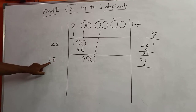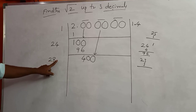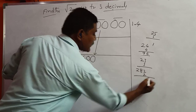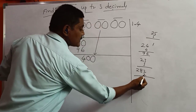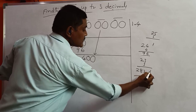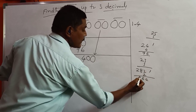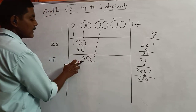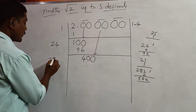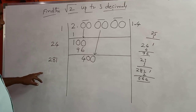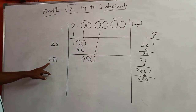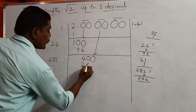Again put down 2 zeros making it 11900. We already wrote 2.41; double the last digit 1 to get 2. The divisor becomes 2820. What number do we write? If we write 5: 2825×5=14125, not possible. So we take 4: 2824×4=11296. Write 4 here, same number on the right. 2824 into 4 gives 11296.